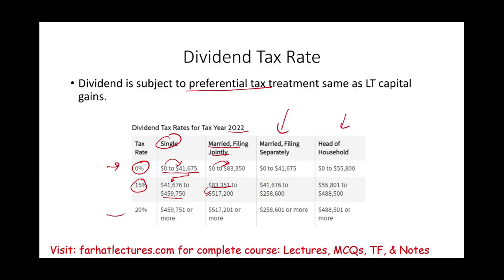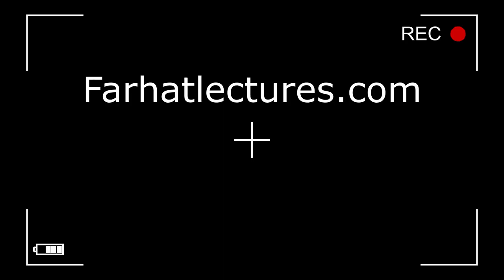The highest dividend tax rate as of now is 20%, which applies if your income is more than $459,751 for single filers, or more than $517,200 for married filing jointly. That's still lower than the ordinary rate, which at that income level is approximately 37%.